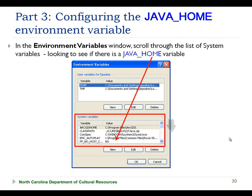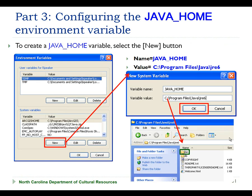In the Environment Variables window, you're going to want to scroll through the list of System Variables that you see at the bottom of the window. The variables are arranged alphabetically, so you're just going to want to scroll down through the list to see if a JAVA_HOME environment variable is set. If you do not see a JAVA_HOME environment variable, you're going to want to create a new variable by selecting the New button.